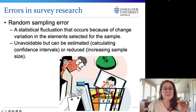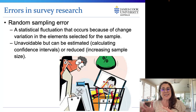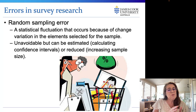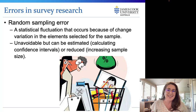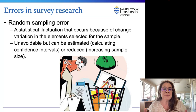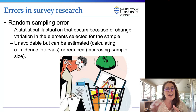Random sampling error occurs because most surveys try to portray a representative cross-section of a particular target population. Even with technically proper probability sampling, random sampling errors will occur due to chance variation. Without increasing the sample size, these statistical problems are unavoidable. However, random sampling errors can be estimated, and this is discussed in more detail in chapter 12.